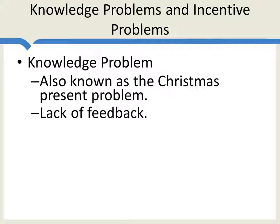Moreover, the one thing about getting a gift for your wife for Christmas is you'll learn pretty quickly whether you got the right gift or not. So there's plenty of feedback there. In the case of giving a gift to a person in the developing world — giving them some aid — you're never going to get feedback. You're never going to hear back from them whether you actually got them something which was useful to them. That's the knowledge problem in a nutshell.